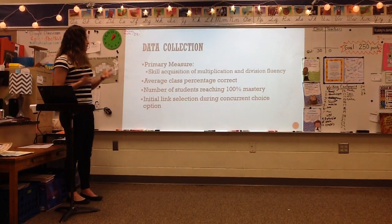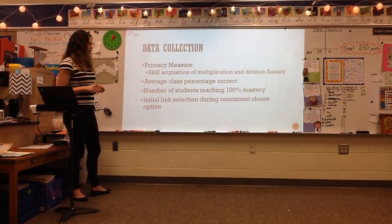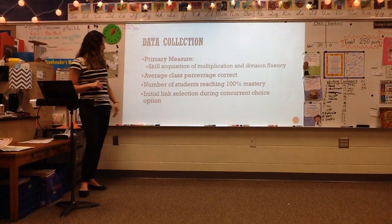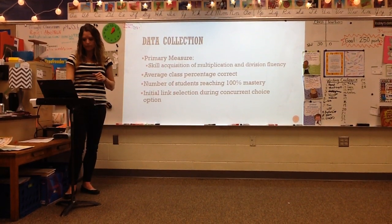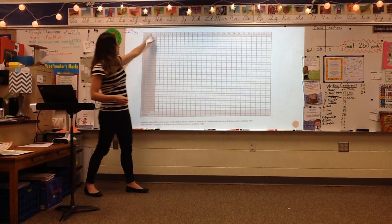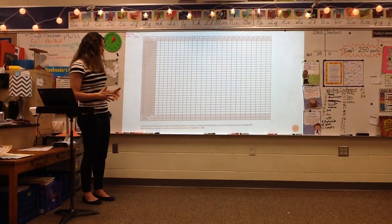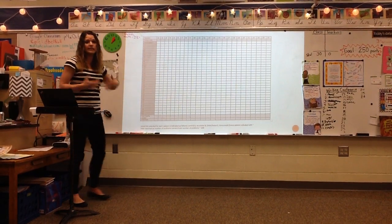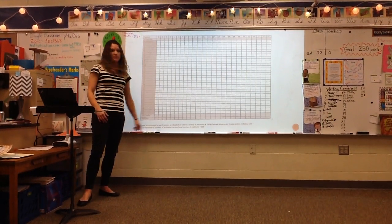As I'm collecting data, my primary measure is going to be on skill acquisition of multiplication and division fluency. I'm going to be looking at the average class percentage correct, the number of students reaching 100% mastery, and I'm going to take data on what initial link selection kids are most preferring when the concurrent choice option comes up. The data sheet has participants number-coded, sessions along the top, a spot to indicate the initial link selected — A for no-choice condition, B for child choice, or C for concurrent choice — then the percent correct for each student, the total number of kids meeting 100% mastery, and the class mean.